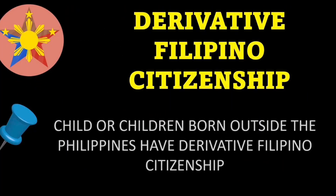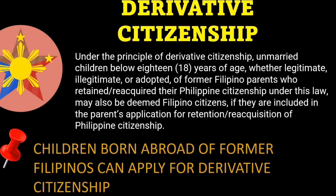Now let's talk about derivative Filipino citizenship. A child or children born outside the Philippines have derivative Filipino citizenship, but there is a huge difference. If you are unmarried children below 18 years of age — whether legitimate, illegitimate, or adopted — of former Filipino parents who retained their Philippine citizenship under the law, you may be deemed a Filipino citizen. If you are born of former Filipinos, you can apply for derivative citizenship.